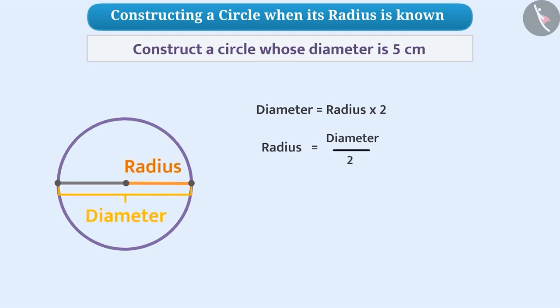Since, to draw a circle, the length of the radius is required, we will divide the diameter by 2, so that we know the measurement of the radius to be 5 by 2, which is equal to 2.5 cm.